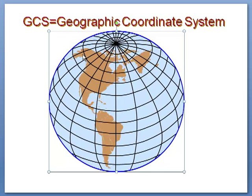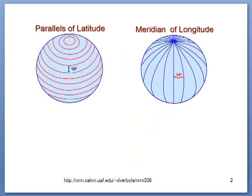In general, Alaska has a negative longitude because it's west of the prime meridian, except if you get way to the tip of the Aleutian Islands — then we cross 180 degrees and actually have an eastern longitude.